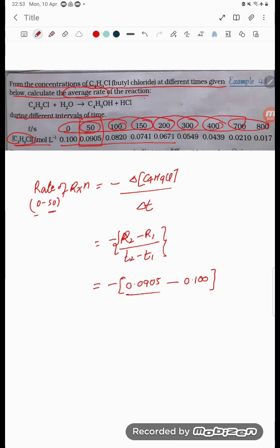Divided by T2 which is 50, and T1 which is 0. Solve it and check how much value you get for this time interval. Let us try to subtract the values.